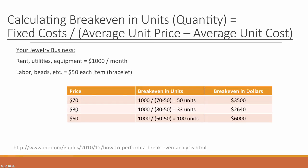Now what happens if you increase your price to $80? Each unit you sell is now contributing $30 toward covering your fixed costs. So you take $1,000 and divide it by $30, and you find that if you sold 33 units, you would break even.